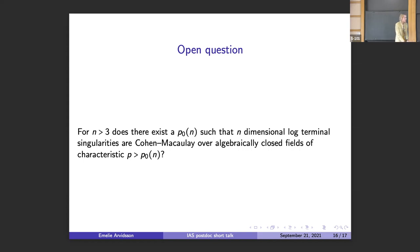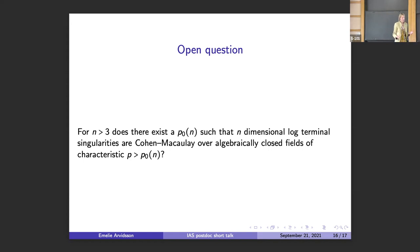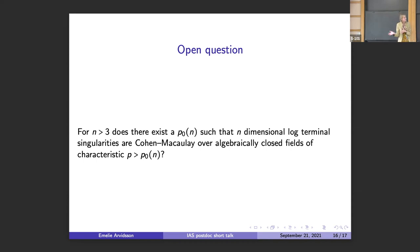Question: In higher dimensions, what is the relationship between this and a vanishing theorem? Answer: That's a very good question. One would want to say there is a direct link, because I think the existence of PLT blow-ups is known in higher dimensions, so you could do something similar. But we really use the statement that PLT singularities have this good Cohen-Macaulay property, and this is not known in higher dimensions. So there is not a direct relation, even though morally there is one.